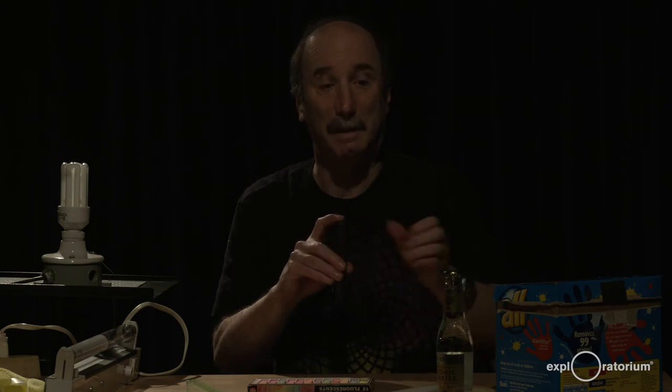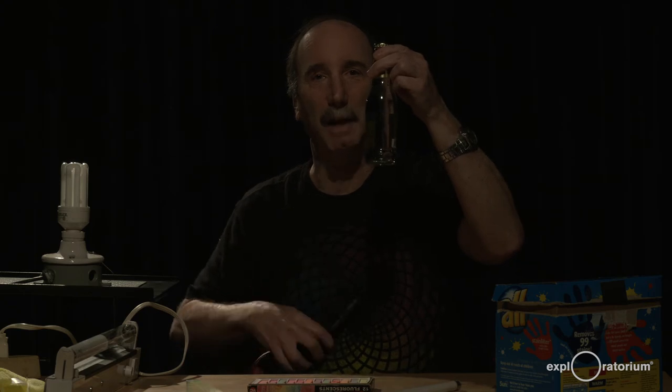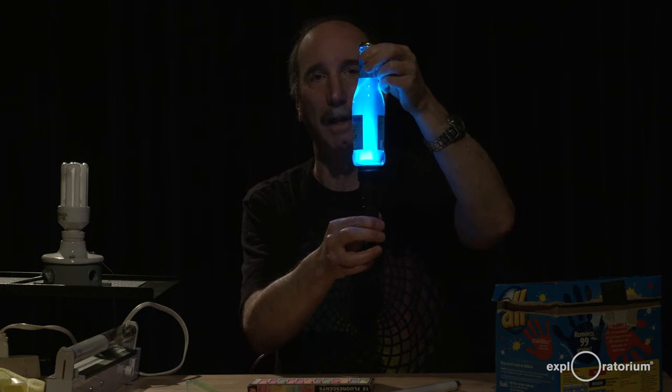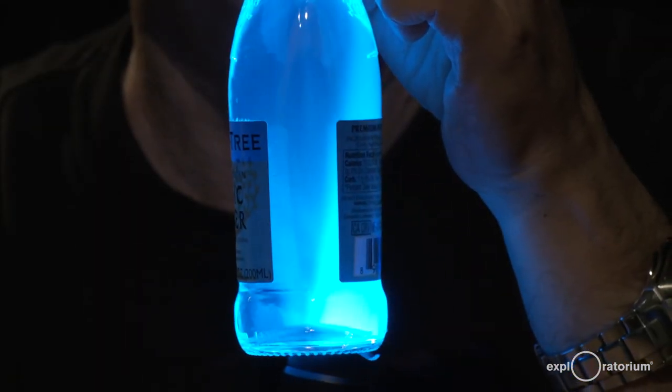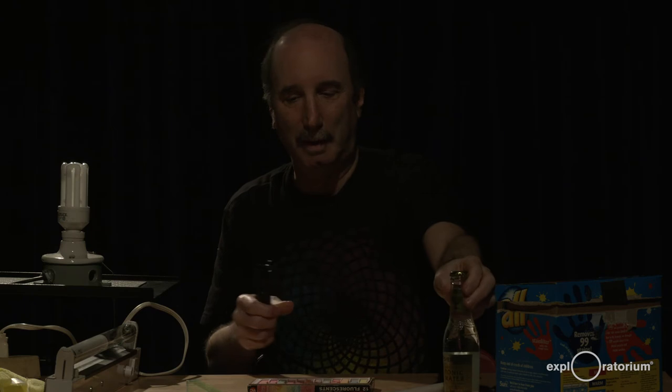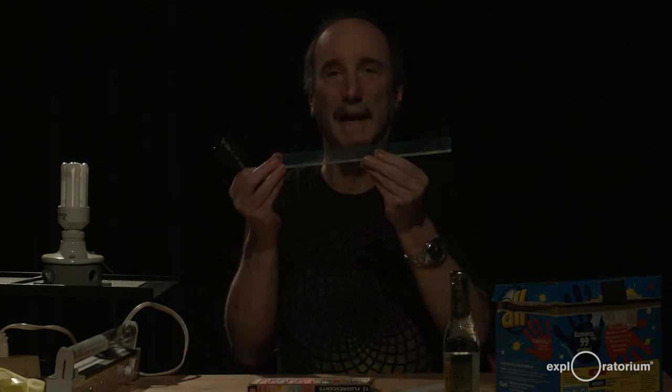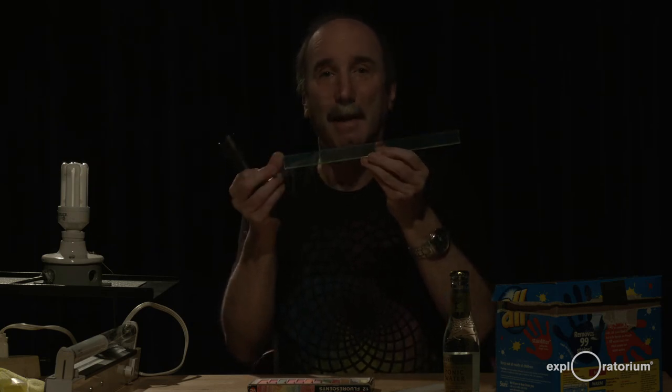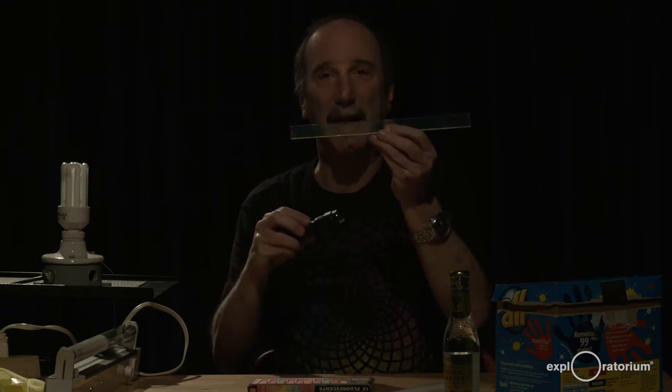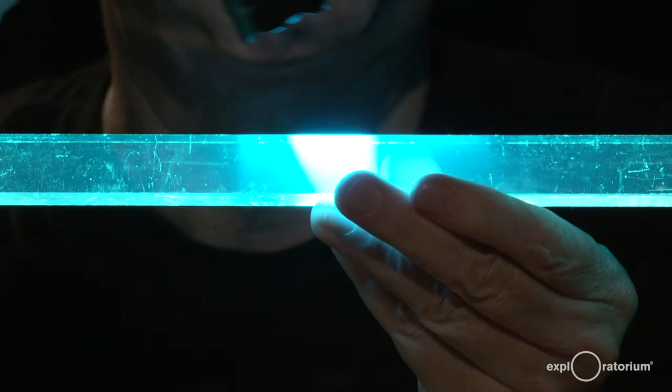Another thing that's really cool that's fluorescent is tonic water. The quinine in tonic water is fluorescent. And if I shine the ultraviolet flashlight on it, it glows a beautiful bluish color. If I move the flashlight around, you can see the beam of the flashlight inside the bottle. Some manufacturers put fluorescent dyes into their plastics. This particular piece of plastic is designed for atomic nuclear experiments that when particles go through this, it gives off a flash of light and the fluorescent dye in here enhances that flash of light. If I put my flashlight on that, you can see it glows a beautiful bright, bright green color.